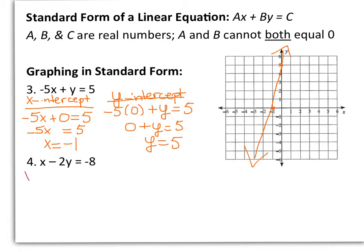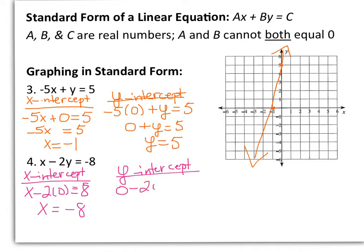Then in number 4, again same idea, let's find our x and y-intercepts. So for x-intercept, plug 0 in for y, negative 8, I'm left with x equals negative 8. Then your y-intercept, plug 0 in for x. We have negative 2y equals negative 8, or y equals 4. So I will plot negative 8 on my x-axis, so I'm just off the graph a little, and 4 on my y-axis, and then I can connect my two points.